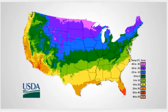Here is the latest cold hardiness map of the United States. This is a 2012 edition — it was changed drastically in 2012 to represent warming temperatures. What this map represents is the average winter minimum temperature — in other words, how cold does it get in a particular zone?